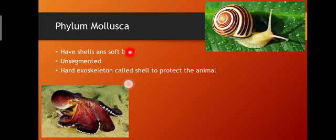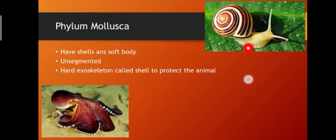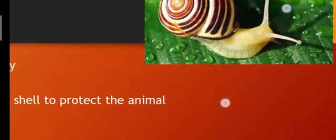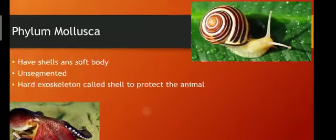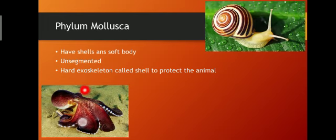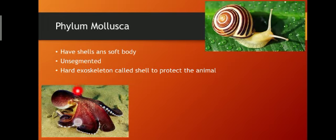Coming to the next phylum — phylum Mollusca. Phylum Mollusca organisms have shells and a soft body. They have shells to protect the soft body present inside. The organisms are unsegmented and have a hard exoskeleton called a shell to protect the animal. The snail, for example, has a hard shell at the top of its body to protect its soft body. Octopus also comes under Mollusca — they have a reduced endoskeleton inside, but share similar characteristics of organisms under Mollusca.